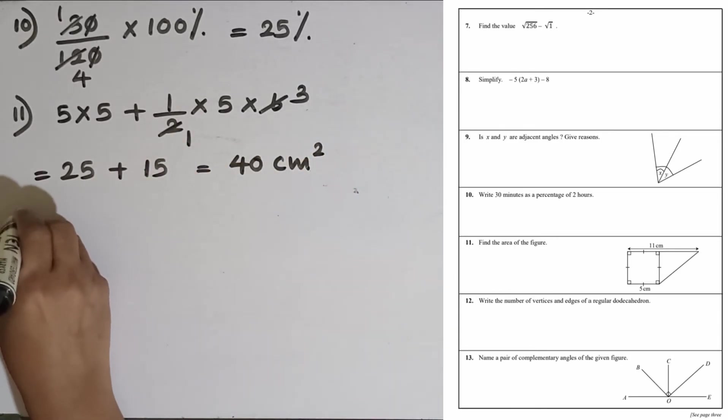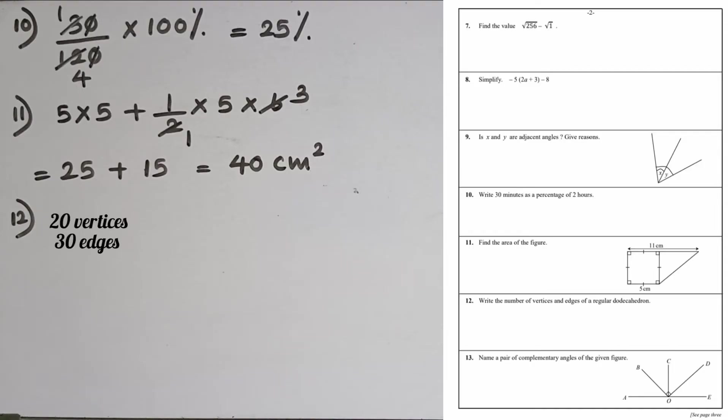Question number 12: Write the number of vertices and edges of a regular dodecahedron. In a regular dodecahedron we have 20 vertices and 30 edges.